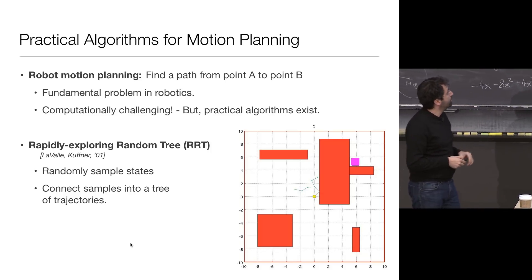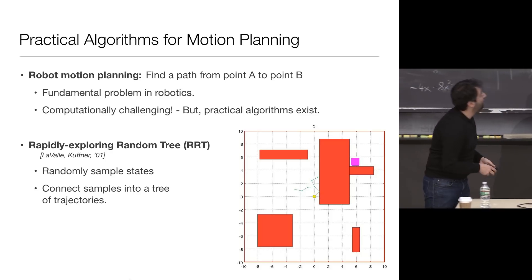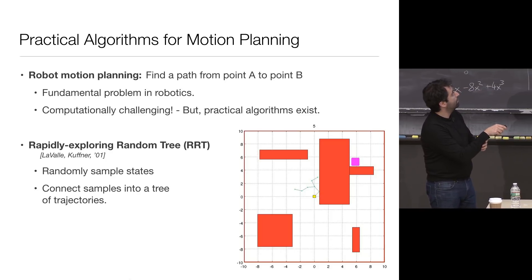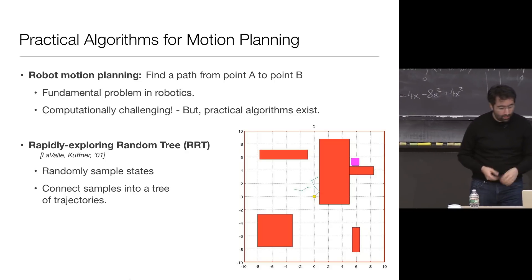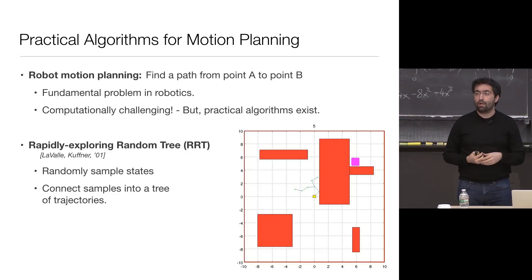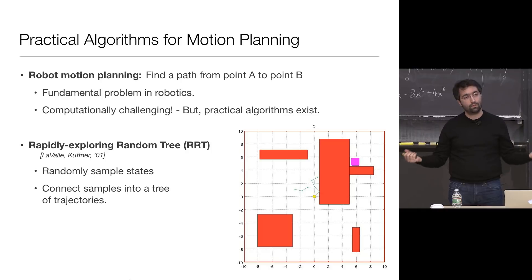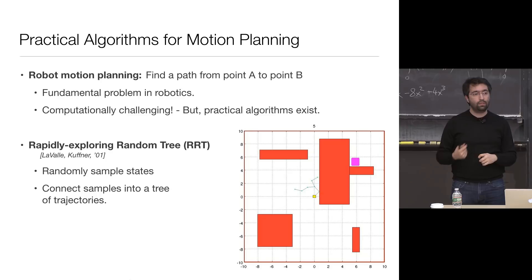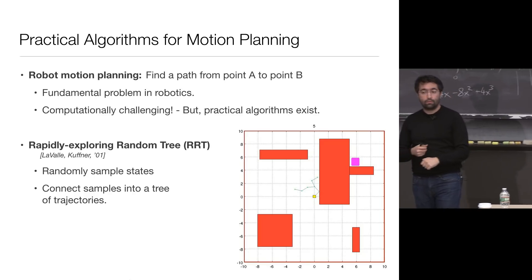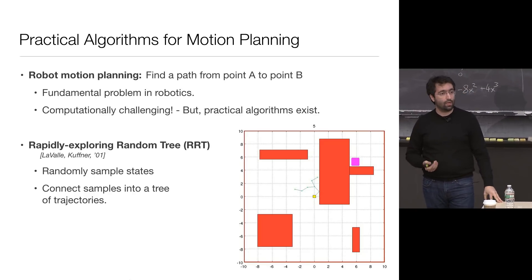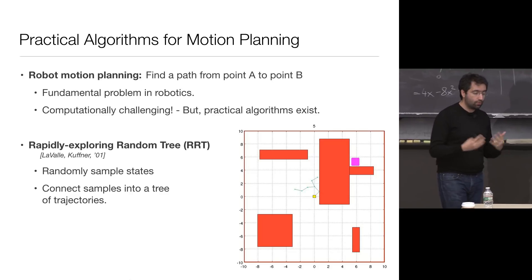The idea is quite simple. You're starting in the middle of an area — there's an orange dot you're starting from, you want to go to the magenta goal region, there are red obstacles. You want to find the path that goes from the initial condition to the goal. That's the basic motion planning problem. It turns out this problem is computationally challenging — as the number of dimensions increases, you can prove that any complete algorithm will scale exponentially in computation time. So at some point you'll run out of memory or time.